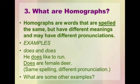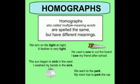Here is an example: 'does' and 'does'. 'He does like to run' means he loves to run, and 'does' meaning female deer — same spelling, different pronunciation. Homographs are also called multiple meaning words; they are spelled the same but have different meanings.